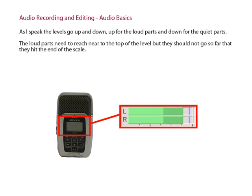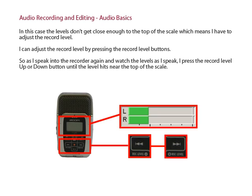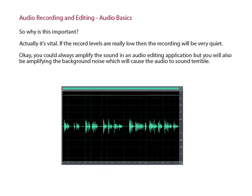The levels go up for the loud parts and down for the quiet parts. The loud parts need to reach near the top of the level, but they shouldn't go so far that they hit the end of the scale. In this case, the levels don't get close enough to the top of the scale, which means I have to adjust the record level. I can adjust the record level by pressing the record level buttons, pressing up or down until the level hits near the top of the scale.